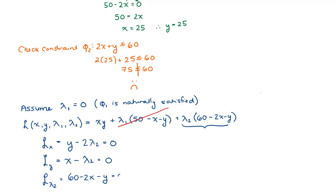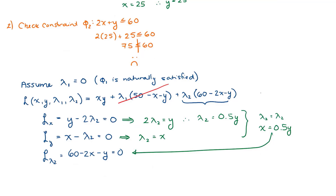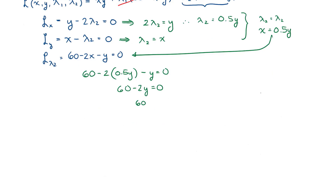Setting these all equal to 0: from the first equation, 2 lambda 2 equals y, so lambda 2 equals 0.5y. From the second equation, lambda 2 equals x. Combining: x equals 0.5y. Substituting into the third equation: 60 minus 2 times 0.5y minus y equals 0, giving 60 minus 2y equals 0, so y equals 30. And since x equals 0.5 times 30, x equals 15.